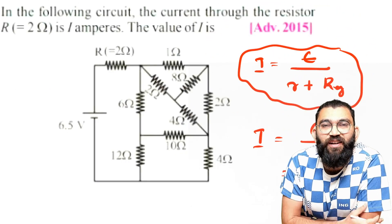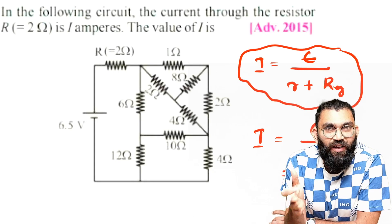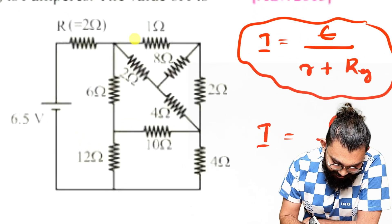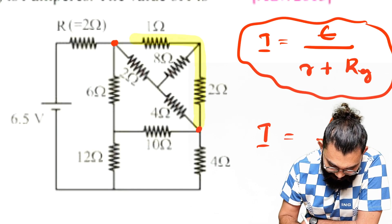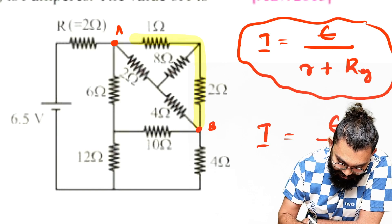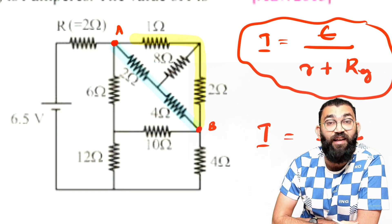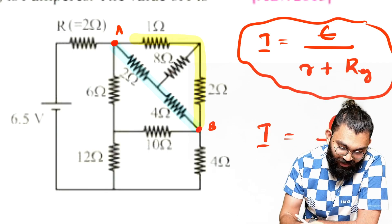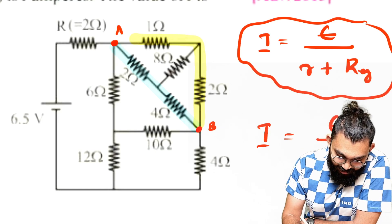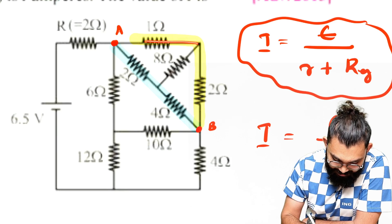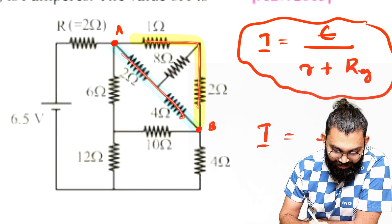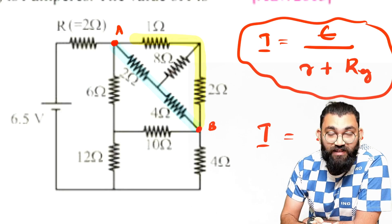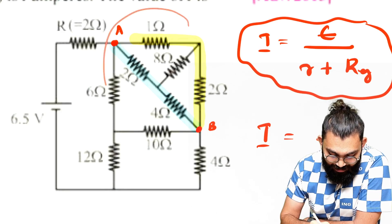To calculate the current we need to find the effective resistance of the network. Finding the effective resistance is not easy, but applying a simple concept makes it straightforward. These two resistors are connected between points A and B, and these two resistors are also connected between A and B — they are parallel to each other. The ratio of these two resistors: 2 divided by 4 is 1/2, and here 1 divided by 2 is also 1/2. The ratios are the same, so this is an example of a balanced Wheatstone bridge.